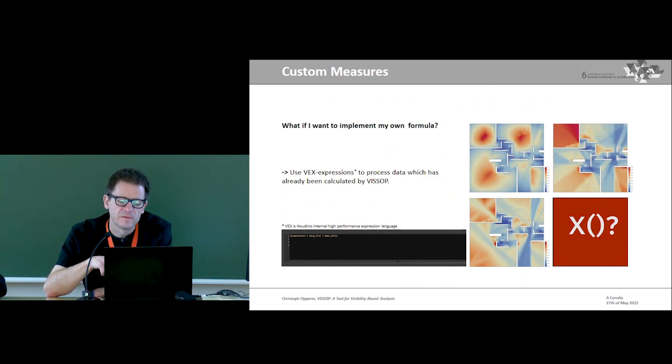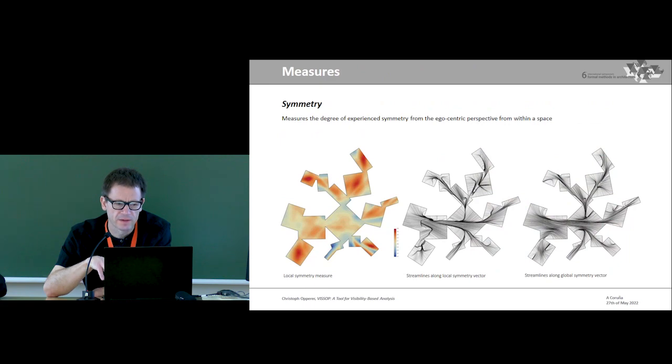As already mentioned, flexibility has been a key aspect in the development of VisApp. It's relatively easy to implement a simple custom measure like you can see here. It's only one single line of code, referencing data which has already been generated by VisApp. These are some of the custom measures, but I'm not going too much into detail because of the time constraint. But this one is symmetry, which is an important feature of architectural space. And because it's related to the experience and aesthetic of space, it has been implemented in VisApp.